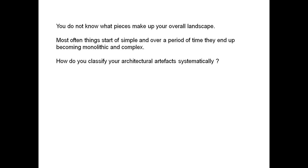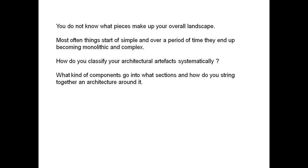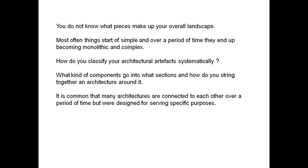You need to classify your architecture artifacts systematically so that there is a proper method in what is being done — people write the UI code at the UI layer, the business logic in the business layer, the data layer in the data layer, and the platform code which binds all of this goes inside the platform layer with no business logic at that level. What kind of components go into what sections and how do you string an architecture around it? If people have worked with extensions and plugins, they know what this means — you need to efficiently remove plugins from your overall product and sell them to end customers without losing the cohesiveness of the entire architecture.